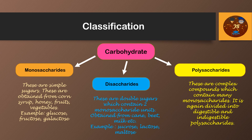Regarding the classification of carbohydrates, it is classified into three types. Monosaccharides are simple sugars obtained from corn syrup, honey, fruits, and vegetables — examples: glucose, fructose, galactose. Disaccharides are double sugars which contain two monosaccharide units, obtained from cane, beet, and milk — examples: sucrose and lactose.